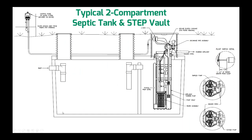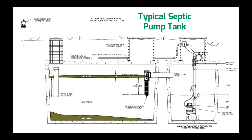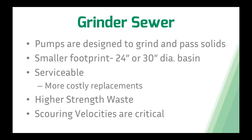A typical STEP installation uses a two-compartment tank. The left compartment is the primary settling tank for solids, fats, oils, and greases. The second compartment holds the effluent, which flows through a filter bank retaining any remaining solids, and the pump moves that water to the collection system. Some jurisdictions require a separate pump tank, increasing the footprint. The sludge layer is at the bottom, scum layer at the top, with a filter on the outlet tee and the pump in the effluent compartment.